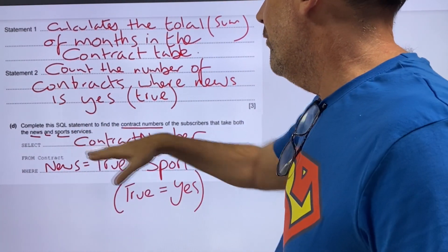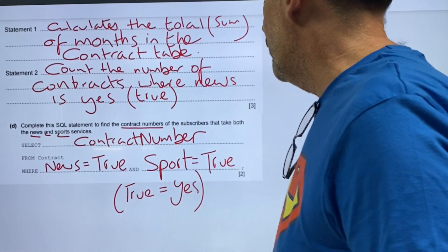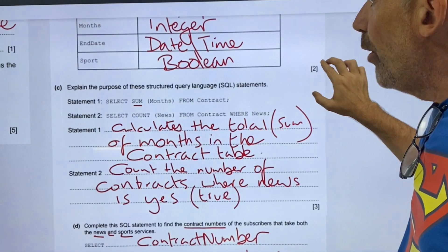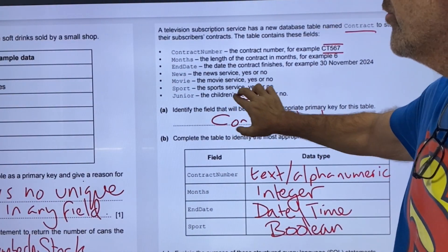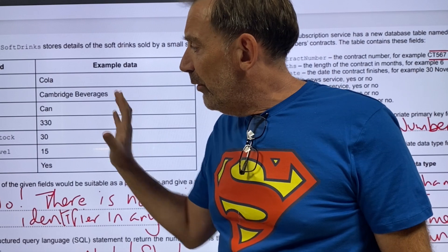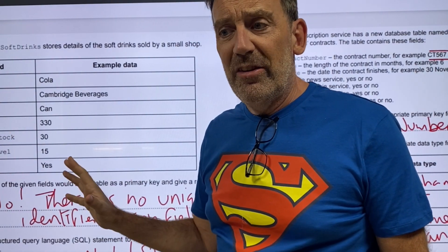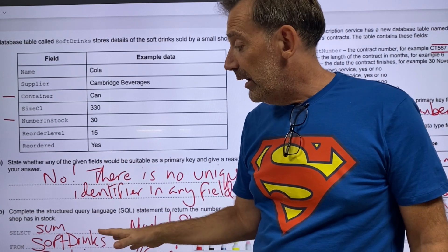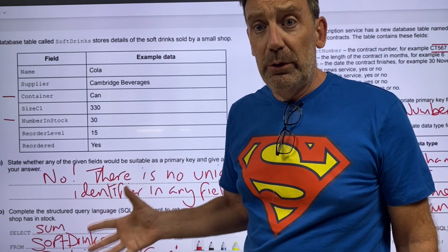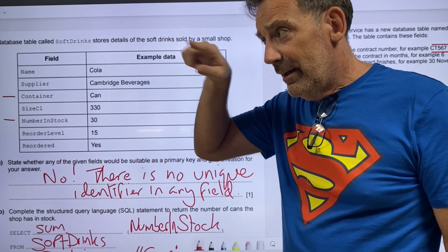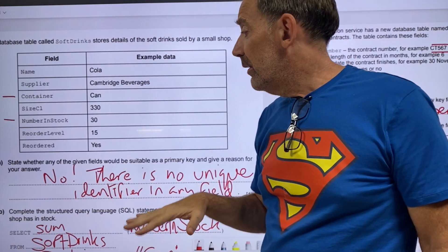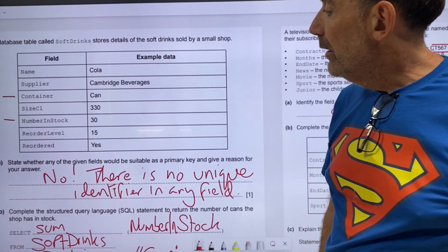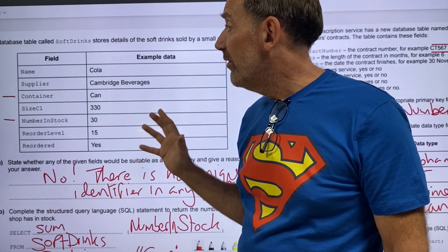Select contract number from contracts where news is true and sport is true. That will get you full marks in both of those database questions. I don't think it really gets any more difficult than that for databases. If you don't know a great deal about SQL, I recommend using something like W3 Schools and doing the SQL module on there. That will give you a good grounding into what we're doing here.